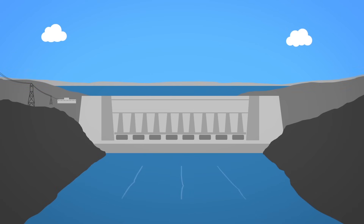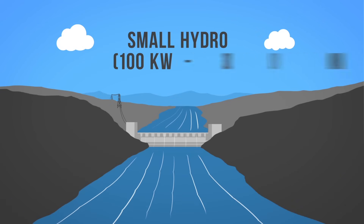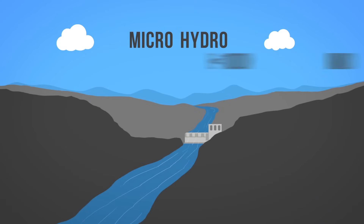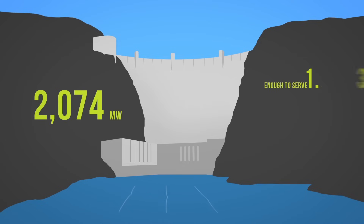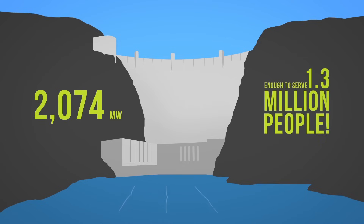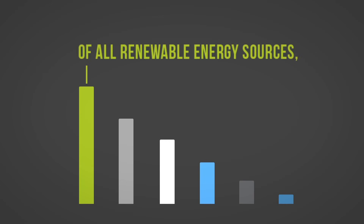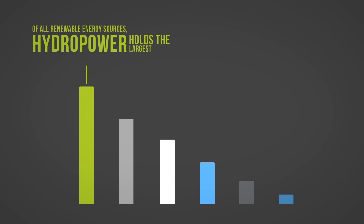There are various sizes of hydro plants that produce electricity: large hydro, greater than 30 megawatts; small hydro, 100 kilowatts to 30 megawatts; and micro hydro, less than 100 kilowatts. The Hoover Dam in the United States is a whopping 2,074 megawatts, which is enough to serve 1.3 million people. Of all renewable energy sources, hydropower holds the largest share of worldwide electricity production.